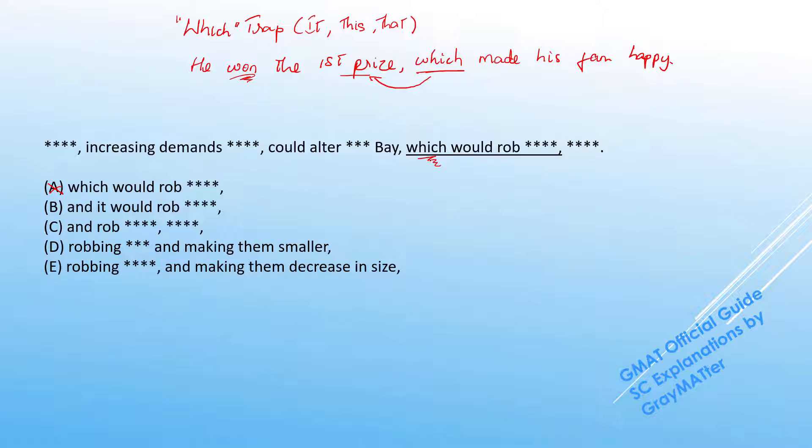Because in the original sentence, the which would refer back to the bay. But what is actually robbing the oysters of the flavor? The alteration of the saline content. So the which cannot be referring to this particular action. So A is out.